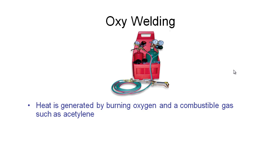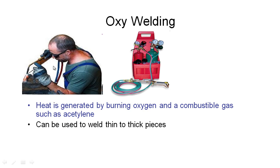Let's take a look at a few different practical examples of how we weld metals together. The first is oxy welding, also called oxy-acetylene or oxy-propane welding. We generate heat by burning oxygen with a combustible gas such as acetylene. You can see the welder here has protective glasses on and is using a torch that mixes gases with oxygen, producing a tight flame that can be directed accurately. In his left hand he has a filler rod, adding extra material to the weld as he goes.